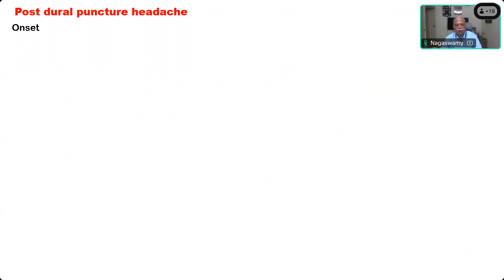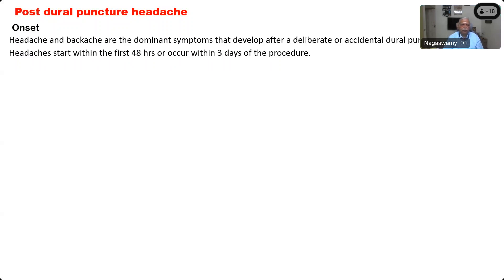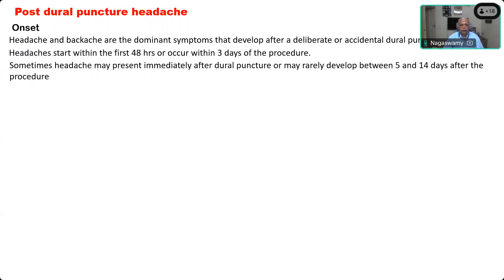First of all, when does it happen? The onset of post-dural puncture headache — the timing is very important. Headache and backache are the dominant symptoms that develop after a deliberate or an accidental dural puncture. It starts within the first 48 hours or within three days of the procedure. But very rarely it may present immediately after the puncture, or may develop between five and seven days. The common presentation is during the first 48 hours, when patients start complaining of headache and neck pain in the posterior part of the head.